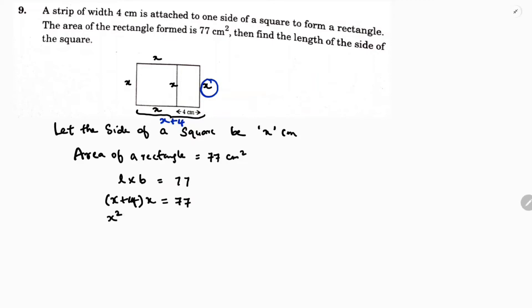Multiplying out: x² + 4x. Taking 77 to the left-hand side: x² + 4x − 77 = 0. Now we factor: x² + 4x − 77, which equals negative 7 times 11.